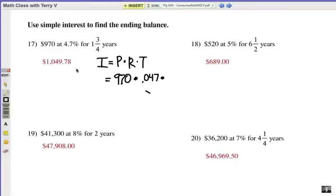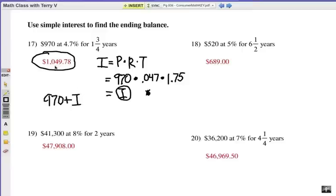Number 17. The final answer is $1,049.78. That's rounded to the nearest penny. So here's how we got that. Use the formula P times R times T. 970 times 0.047. Don't forget the zero. Times 1 and 3 fourths years. So let's convert that into a decimal. 1 and 3 fourths is 1.75. Now that will give us our interest answer, and then of course we have to add that on to 970. Total of that answer you can see there.